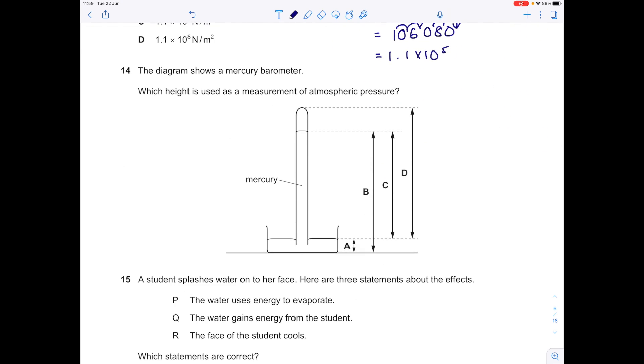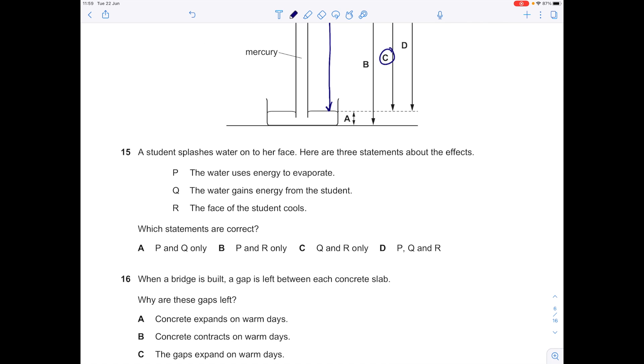The diagram shows the mercury barometer. Which height is used as a measurement of atmospheric pressure? Remember it's all to do with how high that mercury column has raised from a standard point, which is this one here. So the answer here is C. A student splashes water onto her face. Here are three statements about the effects. The water uses energy to evaporate. Yeah, that's true. The water gains energy from the student. Yep, because the student is warm-blooded. The face of the student cools. Yep, that's why they did it in the first place, to cool themselves down. So which statements are correct? Well, it's all of them. So that answer there is D.